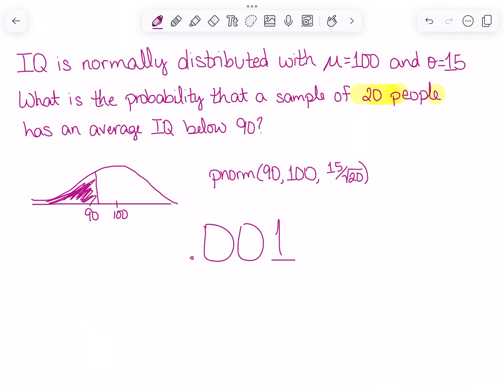So this time it would be pnorm of 90, comma 100, comma 15 divided by the square root of 20. 90, since that's the value I want lower than. 100 is the mean. And then my new standard deviation is 15 divided by the square root of 20.